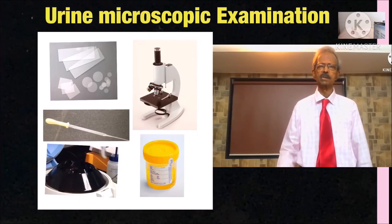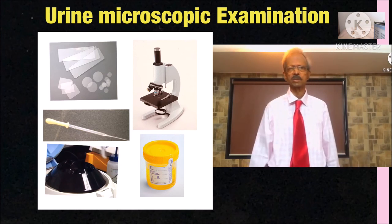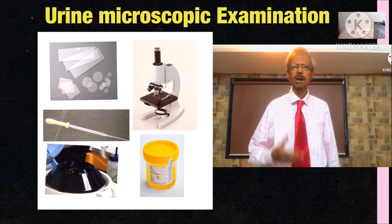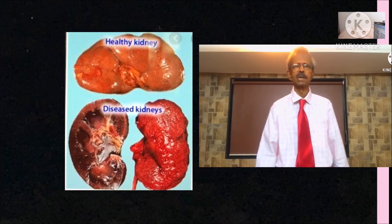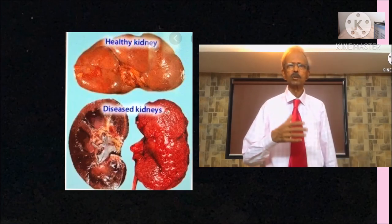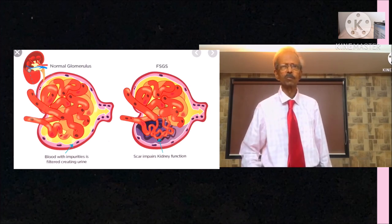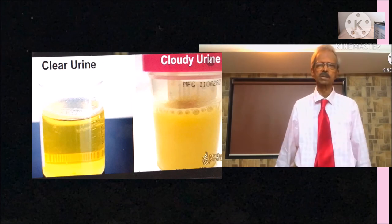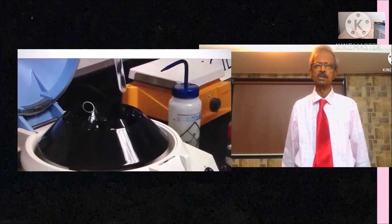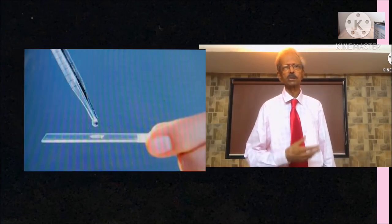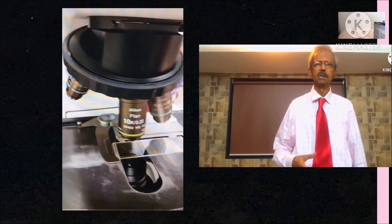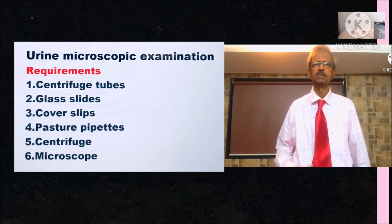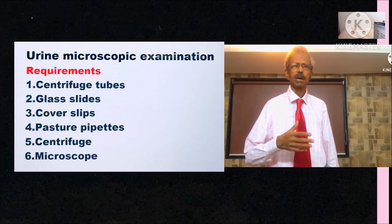Now we will discuss about microscopic examination of urine. The microscopic examination is a valuable diagnostic tool for the detection and evaluation of renal and urinary tract disorders and other systemic diseases. The microscopic elements present in urine are collected in the form of deposits by centrifugation and a small drop of the sediment is examined by making a cover slip preparation under microscope. The requirements are: centrifuge tubes, glass slides, cover slips, Pasteur pipettes, centrifuge and microscope and freshly voided midstream morning urine specimen.